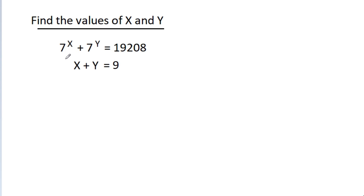In this video, we have given that 7 power x plus 7 power y is equal to 19,208 and x plus y is equal to 9. Then we have to find the values of x and y.